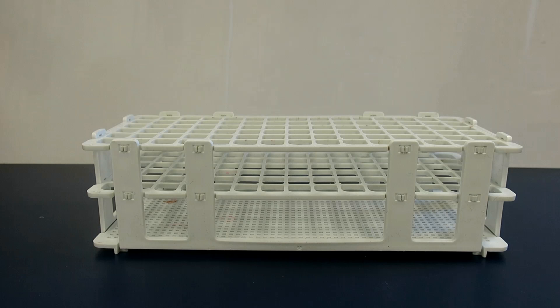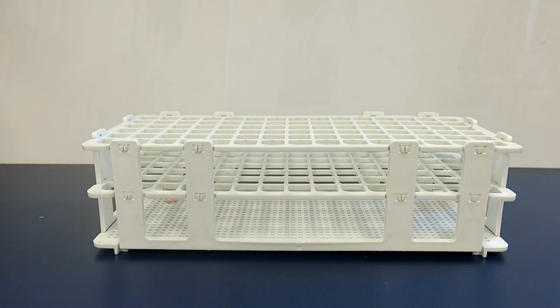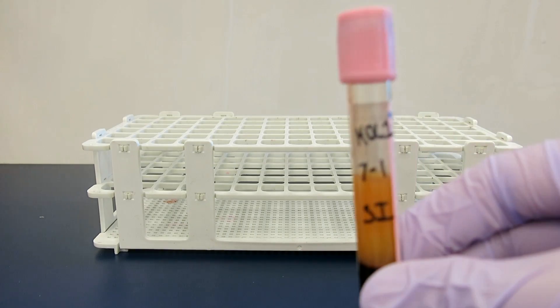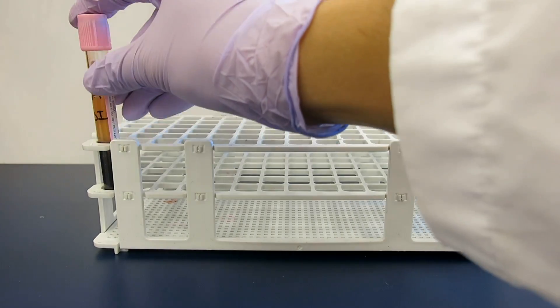Before beginning, we must always label our test tubes and rack them in the correct order. In hole 1 is our centrifuge sample of whole blood. Next is our 2-4% patient cell suspension.